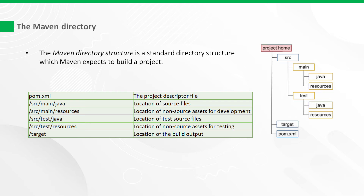The /src path is the standard spot for your project's source files. Most projects put their main files in /src/main, with Java files going into the class path under /java. Additionally, if you want to include assets that are not code, like config files or images, you can use /src/main/resources. Assets in this path will be added to the main class path.